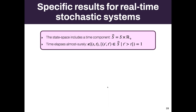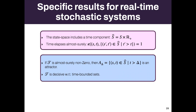What I said so far applies to continuous space stochastic systems in general, regardless of whether time is involved. But now there is a particular component: time. The state space decomposes into a geometric space and time. If we assume that time elapses almost surely — that is, almost surely the system is non-Zeno — then we have very natural attractors: all states after some fixed delay delta form an attractor.